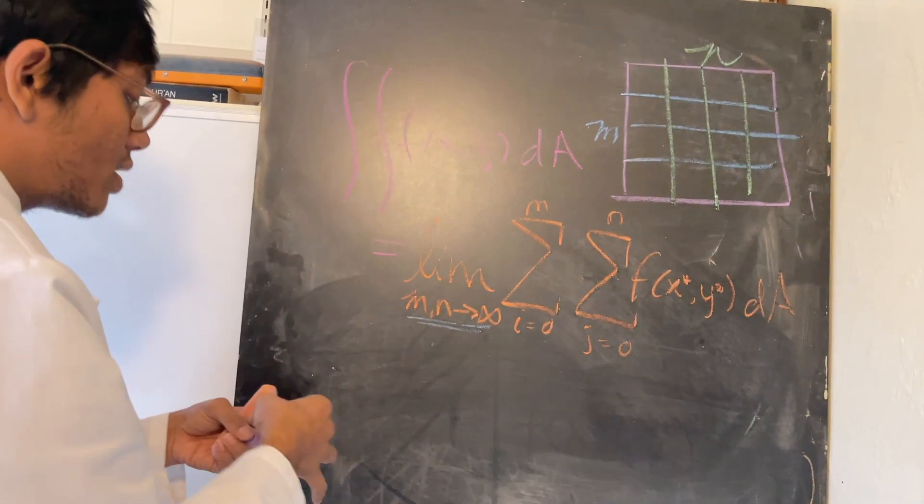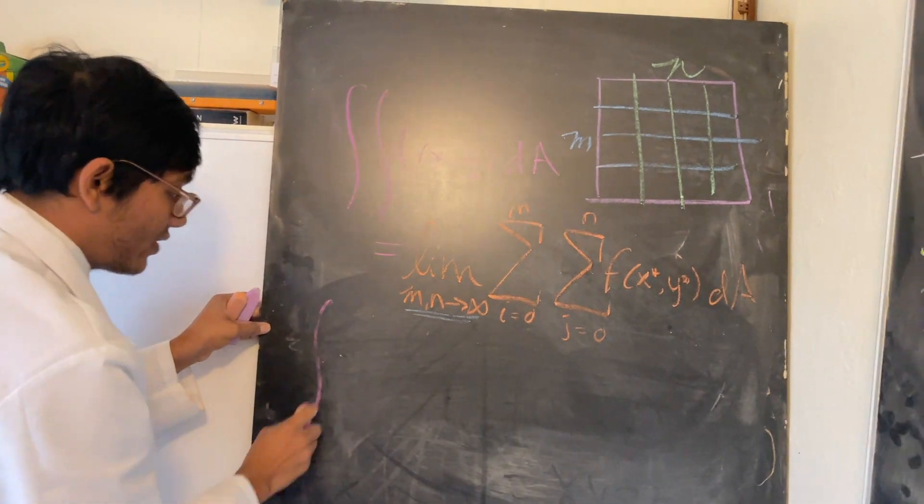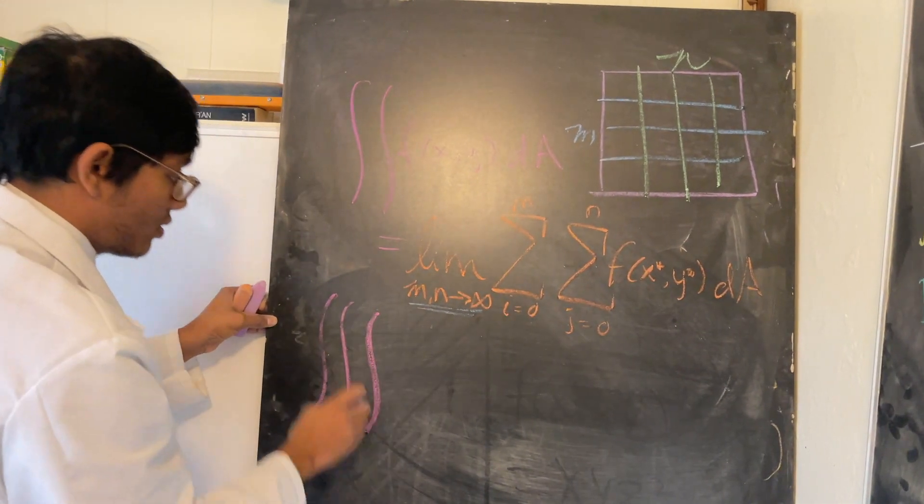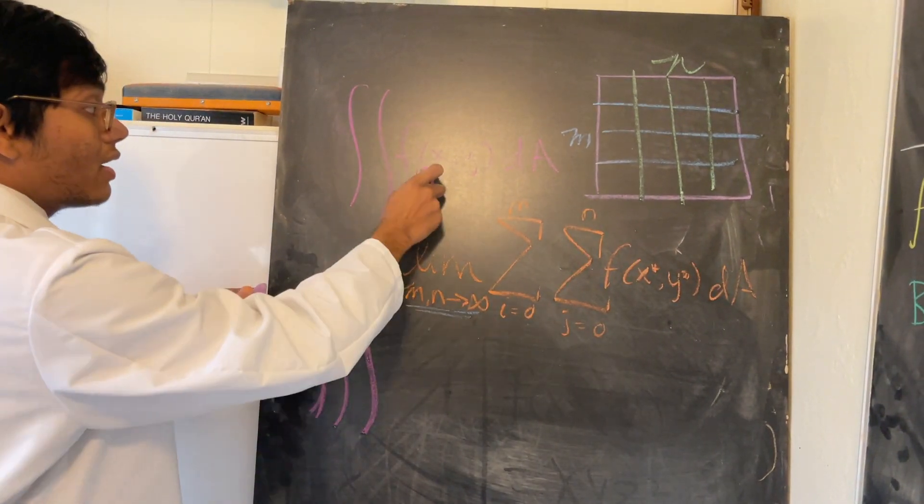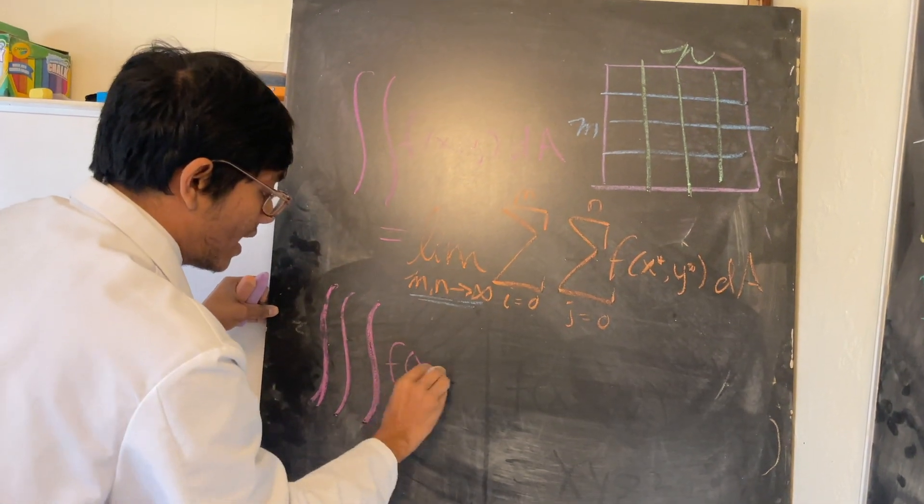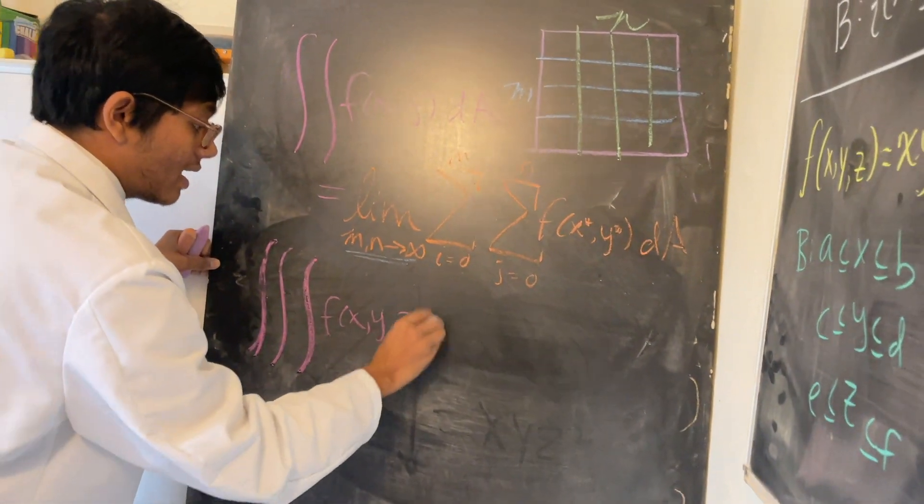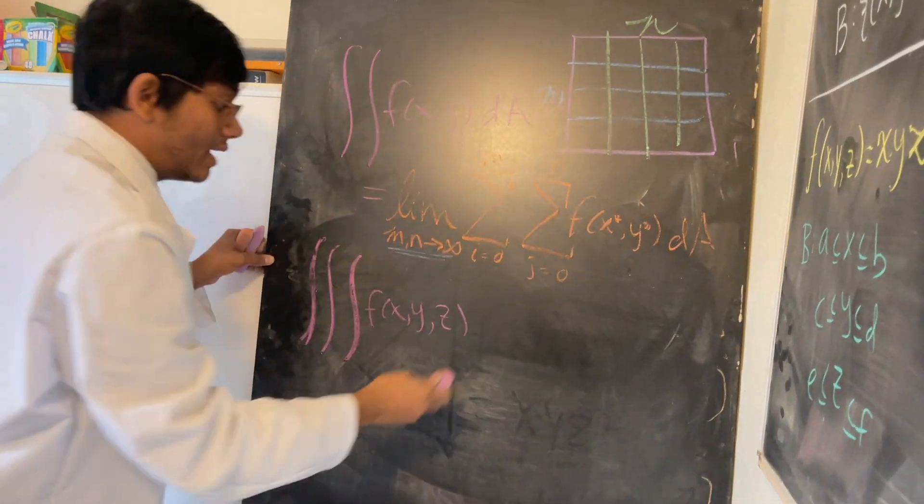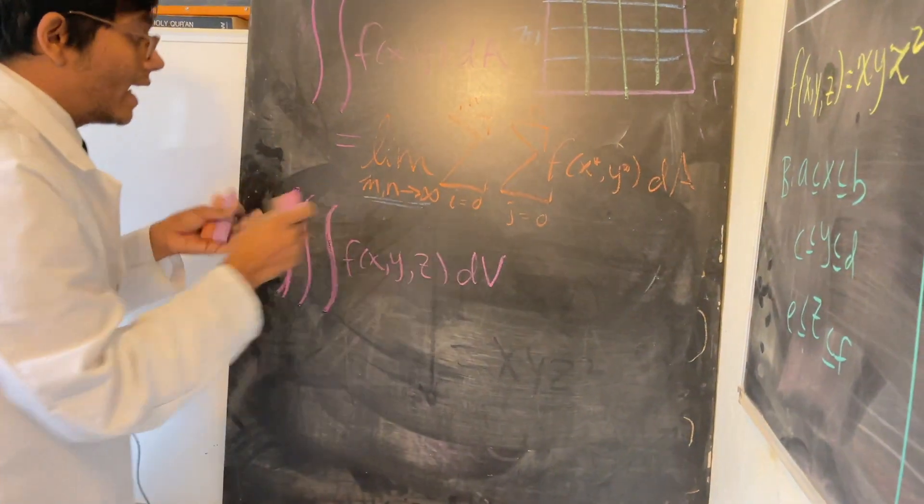Now what do you do with triple integrals? This is double integrals. What if I have a triple integral like this? Well, now I no longer have a 3D function, I have a 4D function. And I'm integrating not over an area, but over a volume. And so now, am I going to have two Riemann sums? No, I'm going to have three.